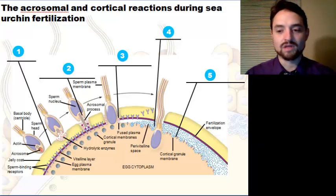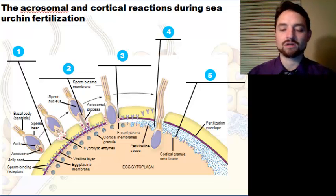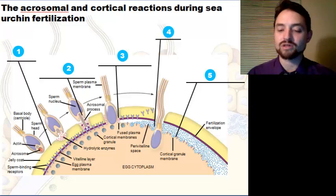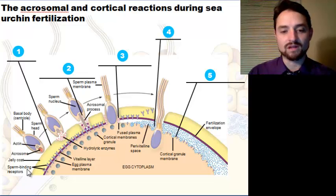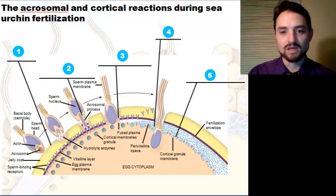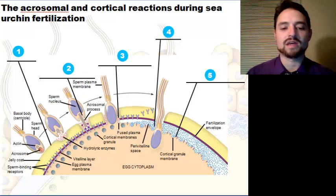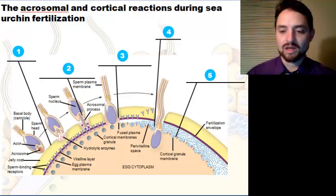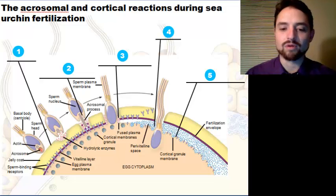While the hydrolytic enzymes digest the jelly coat, actin filaments form the acrosomal process — a structure that protrudes from the sperm head, penetrates the jelly coat, and binds to receptors in the egg cell membrane that extend through the vitelline layer. Step three is the contact and fusion of the sperm and egg membranes, with a hole made in the vitelline layer allowing fusion of the gamete plasma membranes.